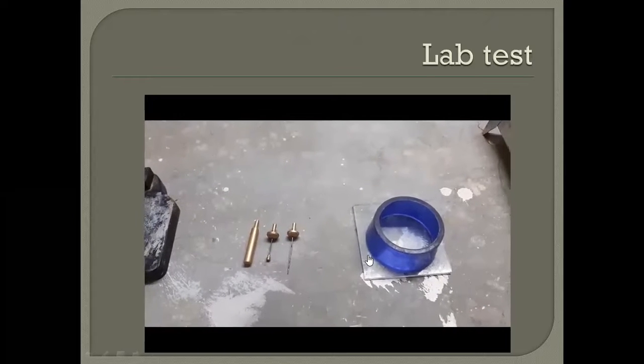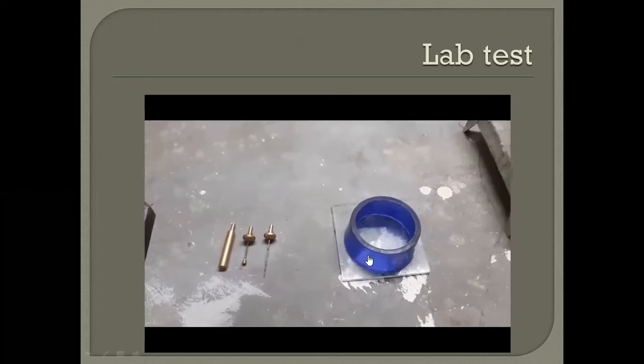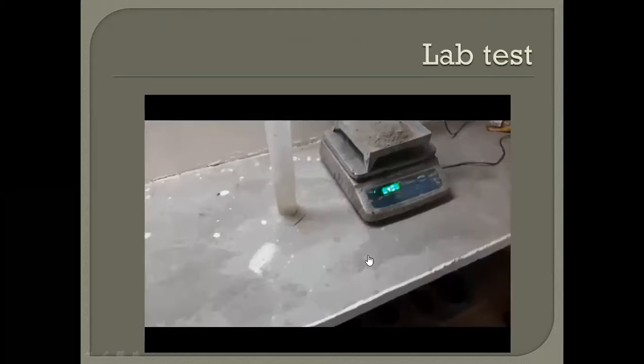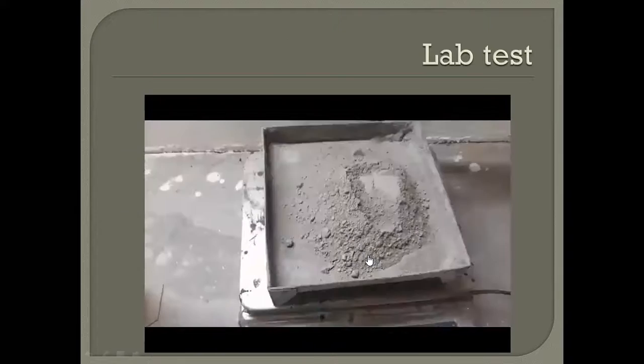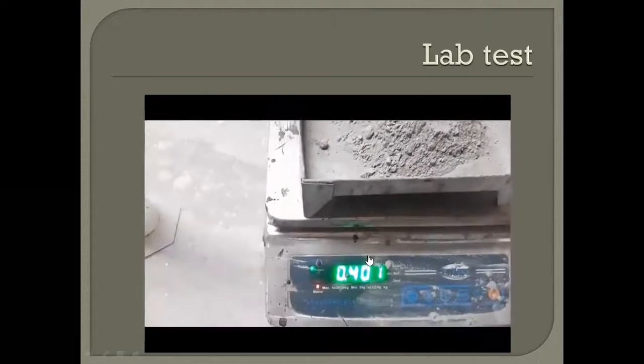Now we are performing the standard consistency test which we will perform with the help of the plunger, the mold, and the glass plate. Here we have the cement. We will take 400 grams of cement.